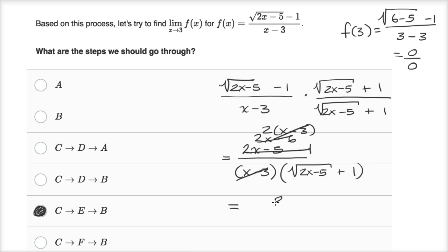And so this is going to be equal to two over square root of two x minus five plus one.